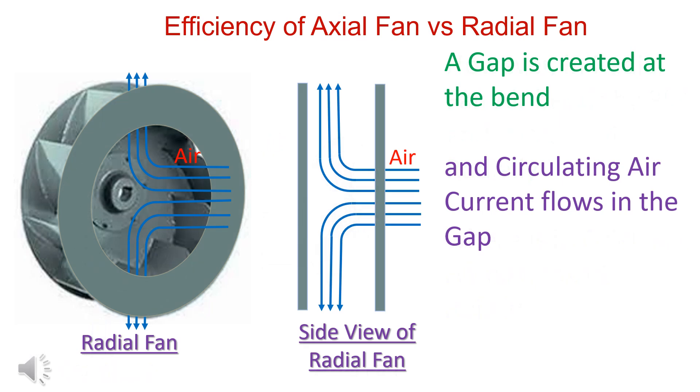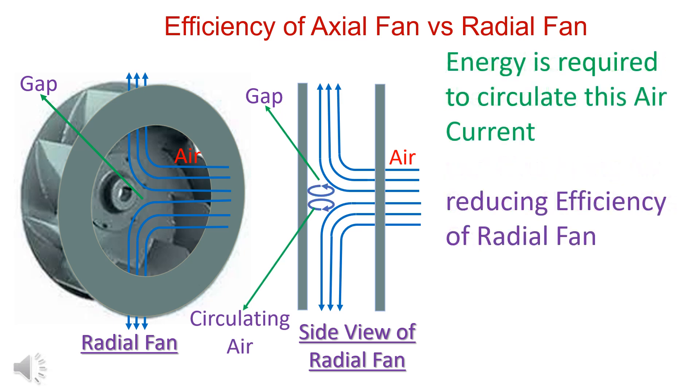In a radial fan, a gap is created at the bend and circulating air current flows in the gap. Energy is required to circulate the air current. This energy is lost, resulting in the reduced efficiency of radial fan.